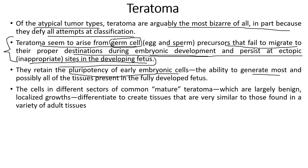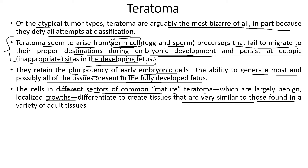These cells retain the pluripotency of early embryonic cells and have the ability to generate most, and possibly all, the tissues present in the fully developed fetus. Cells in different sectors of common mature teratomas, which are largely benign localized growths, differentiate to create tissues that are very similar to those found in a variety of other tissues.